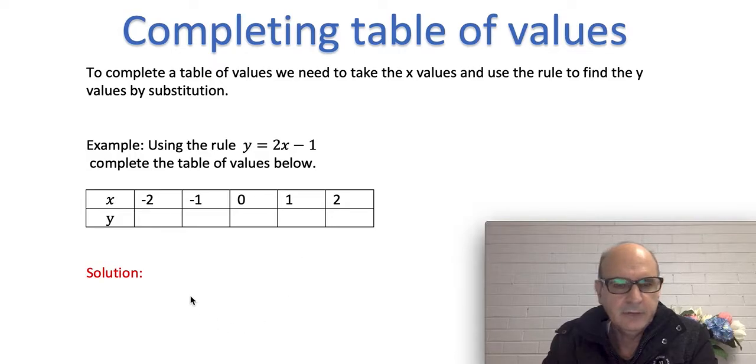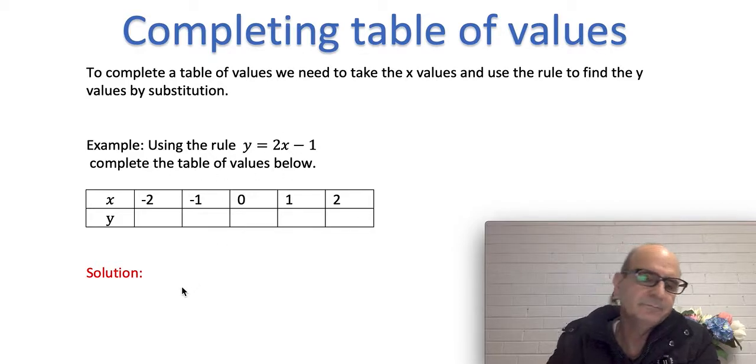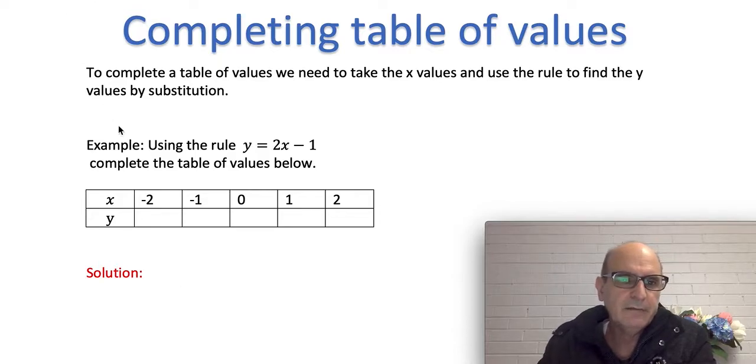Let's look at an example. Using the rule y equals 2x minus 1, complete the table of values below. So what x values do we have here? We have minus 2, minus 1, 0, 1, and 2. They have given these values to us and they want us to use this rule to find the y values.